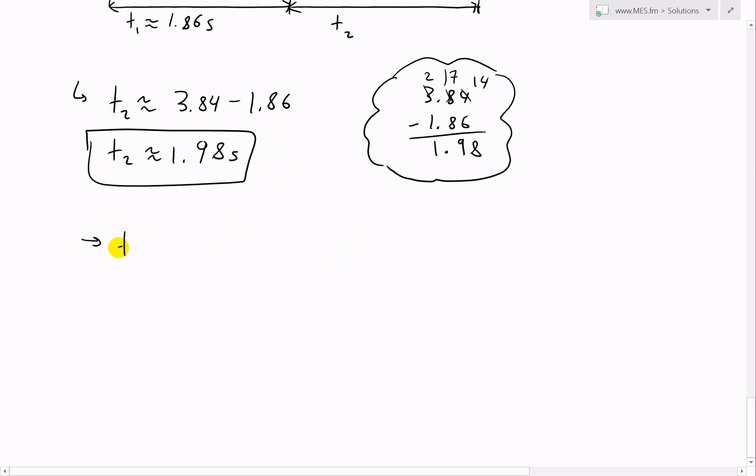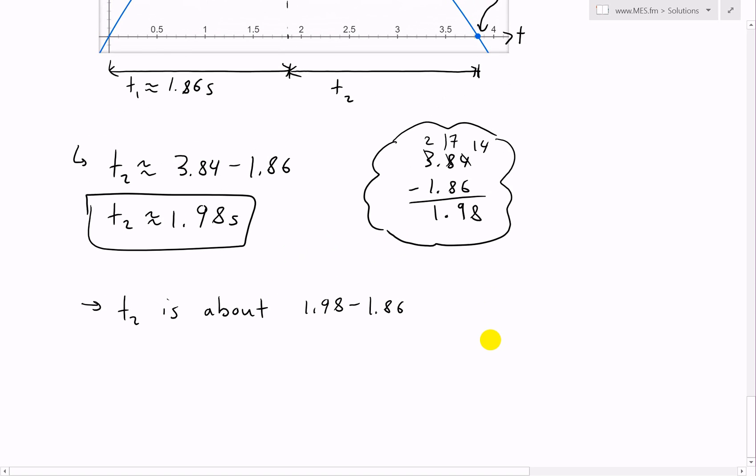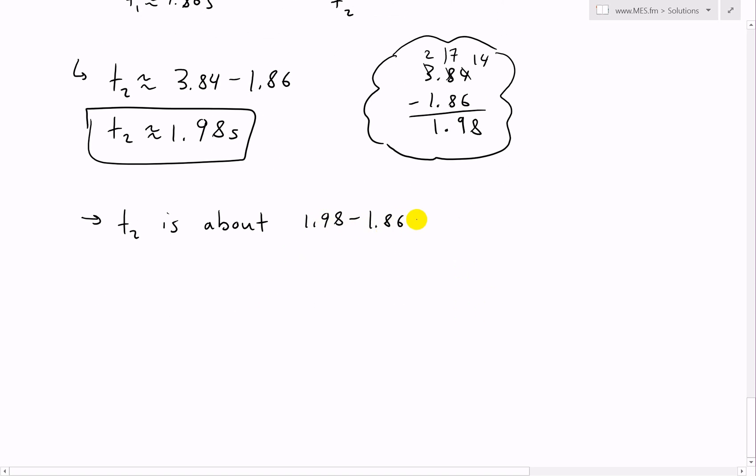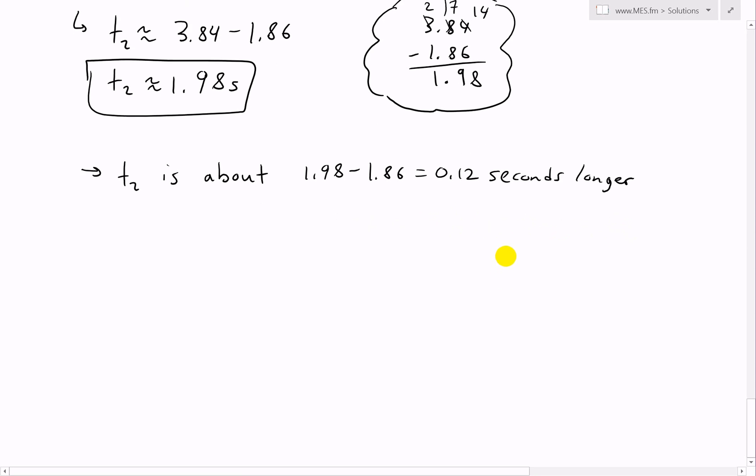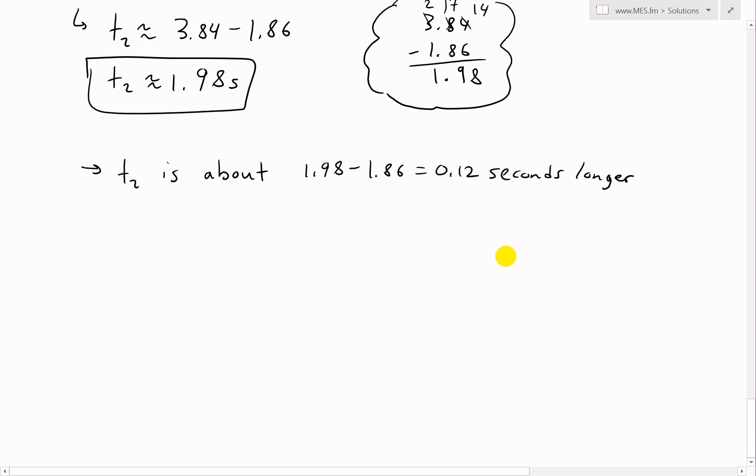So t₂ is about 1.98 minus 1.86 seconds, the difference of 0.12 seconds. So this is about 0.12 seconds longer. For this particular ball in this example, it takes longer for it to reach back down to the ground after it goes from the maximum height.